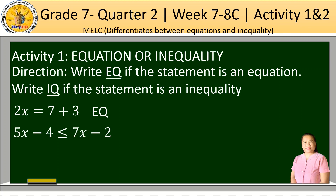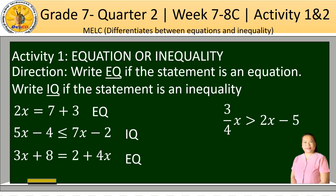Example number 2: 5x minus 4 is less than or equal to 7x minus 2. We have the inequality symbol, so this statement is an inequality. Example number 3: 3x plus 8 is equal to 2 plus 4x — this statement is an equation. Last example, number 4: 4x is greater than 2x minus 5. We have the inequality symbol, so it is an inequality.